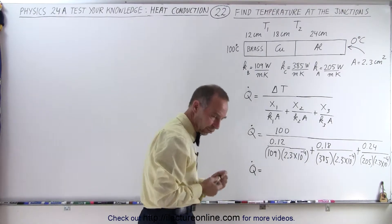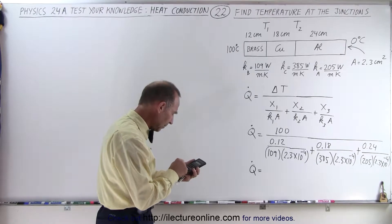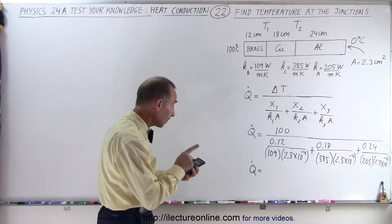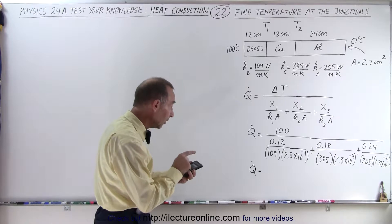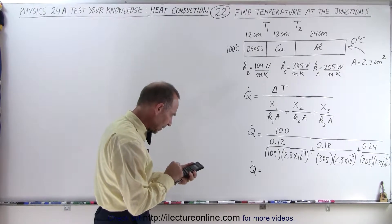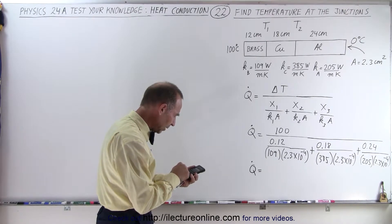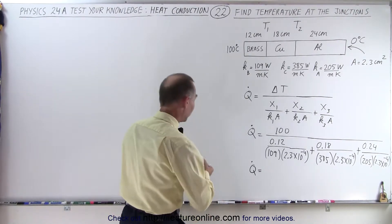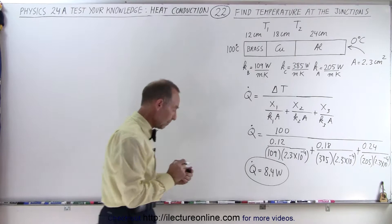The total heat flow: computing 0.12 divided by 109 divided by 2.3×10⁻⁴, plus 0.18 divided by 385 divided by 2.3×10⁻⁴, plus 0.24 divided by 205 divided by 2.3×10⁻⁴ — taking that to the numerator and multiplying by 100 — we get 8.4 watts. So Q-dot is 8.4 watts, which is the heat flow through that combination.